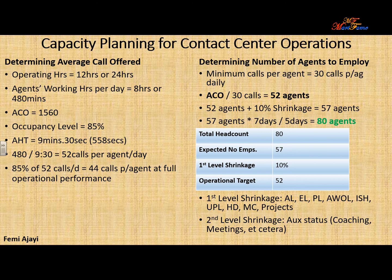70% of 44 calls will be approximately 30 calls, or 31. So now that we've established we want each agent taking a minimum of 30 calls, we divide the average calls the contact center is offering on a daily basis by that number. 1,560 calls divided by 30 calls per agent gives us 52 agents to be employed.